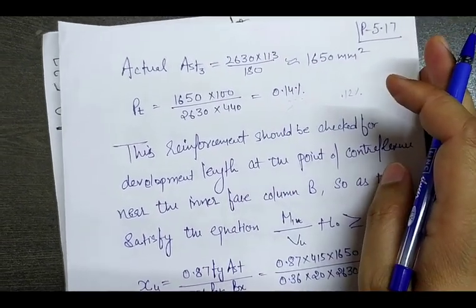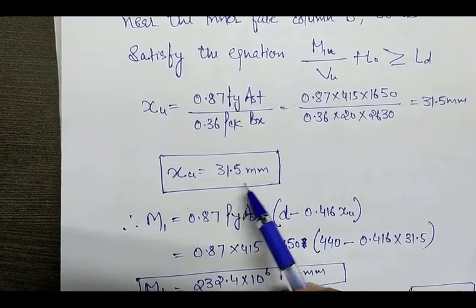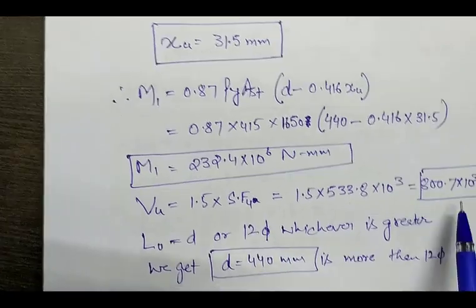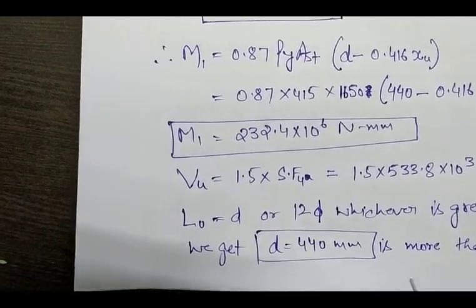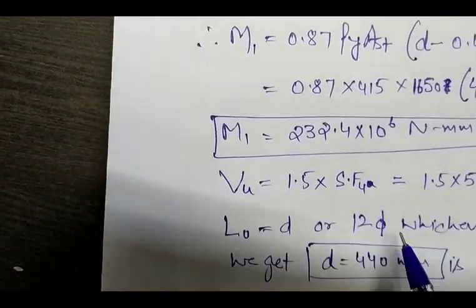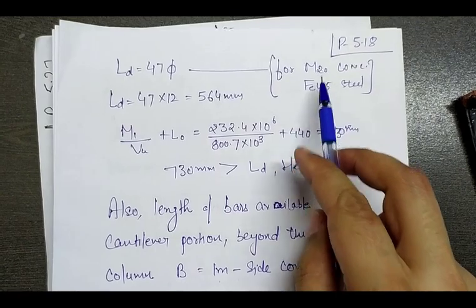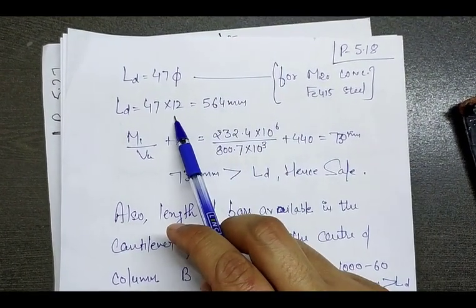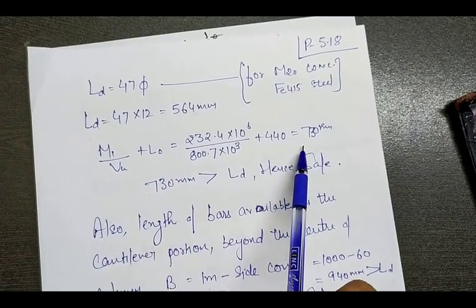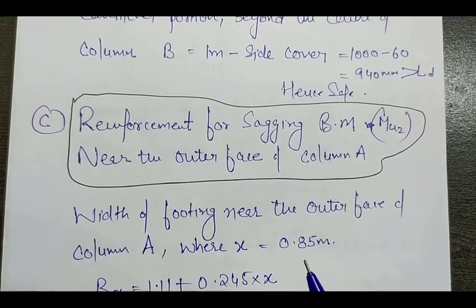The M3 reinforcement is also checked for development length. The value of α is 31.5. M1 is calculated, and VU near column B remains 800,700 N. L0 is whichever of D or 12φ is greater. For 12 mm diameter bars, LD = 564 mm. Substituting into the development length equation gives a value greater than LD — hence we are safe in this zone as well.